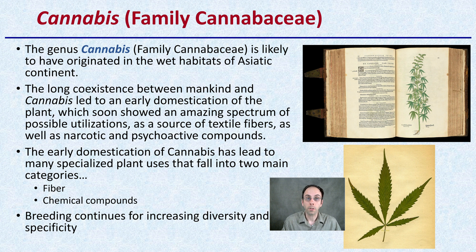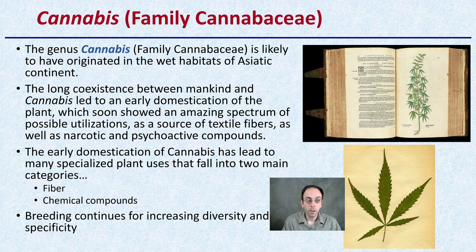It could be the source for textile fibers. It can also be utilized for its psychoactive compounds. This early domestication has led to many specializations of the plant that fall into two main categories: fiber and chemical compounds. And breeding continues for increasing diversity and specificity within these general classifications.